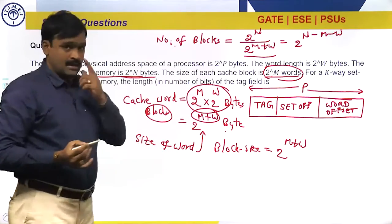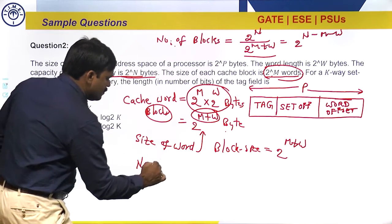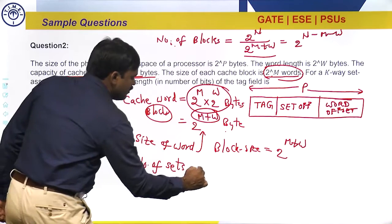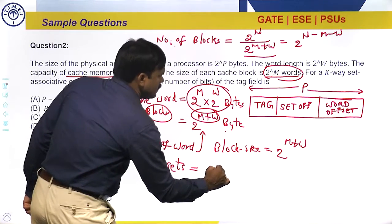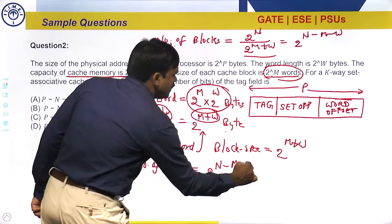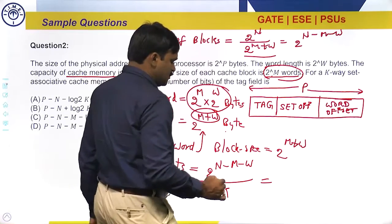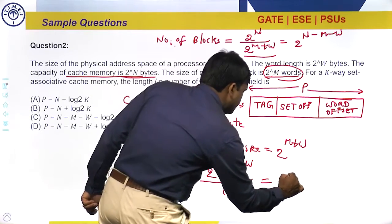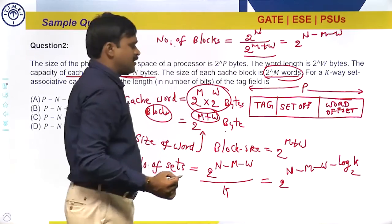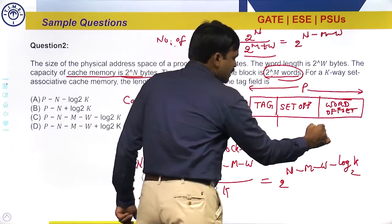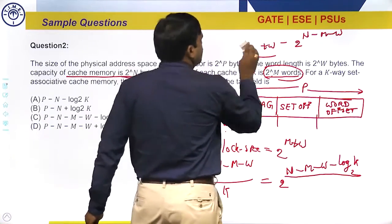Number of sets equals number of blocks divided by k, for k-way set-associative cache. So number of sets equals 2^(n−m−w) divided by k. Taking log base 2 to find the number of bits, the set offset requires n−m−w − log₂(k) bits to identify one set.